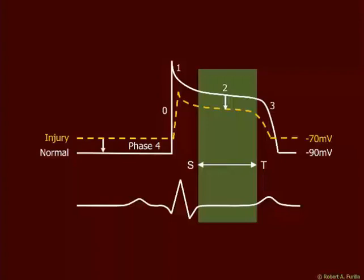Current flows from the most depolarized to the most polarized region. The injured site is depolarized, so current is going to flow toward the healthy site. During diastole, we should see movement away from the electrode recording the injured site. During the ST segment, flow is moving from healthy myocytes to the injured myocytes — positive flow will be moving toward the recording electrode for that particular site.